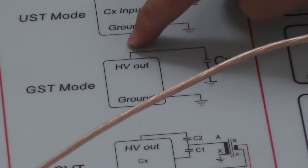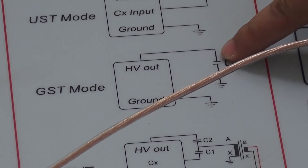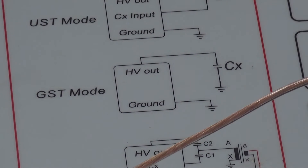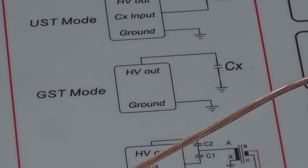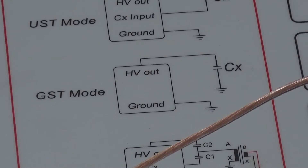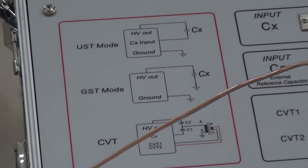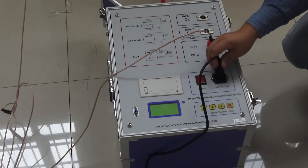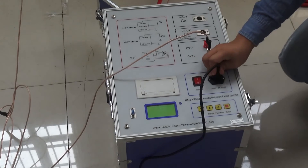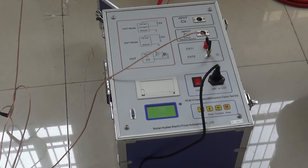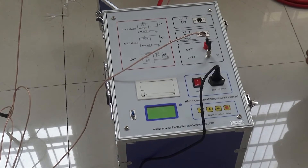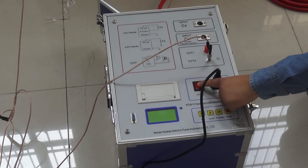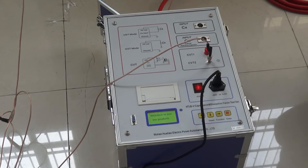So we finish the GST wiring. Make sure the wiring is correct. Plug in the power cord, then power on.